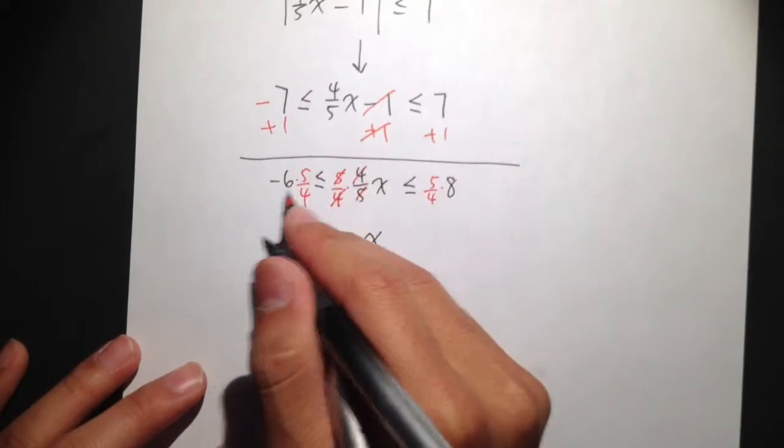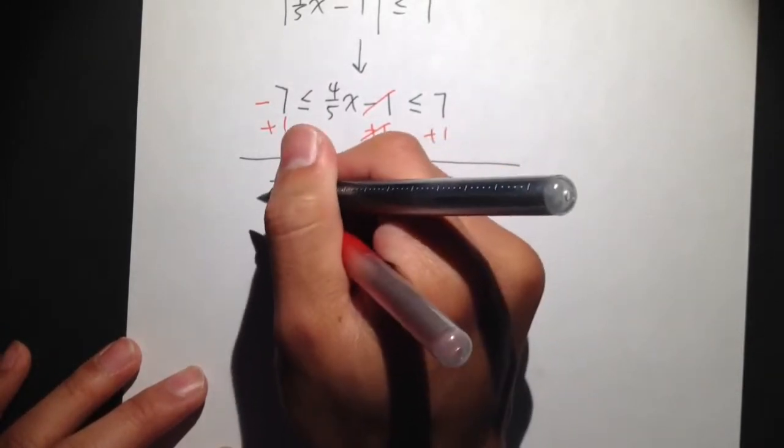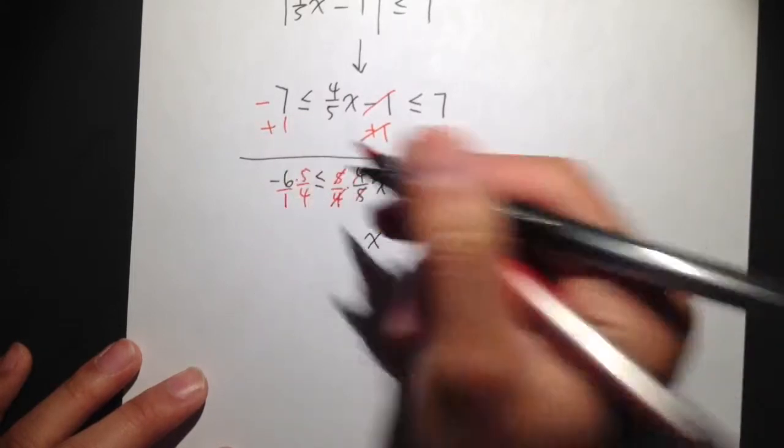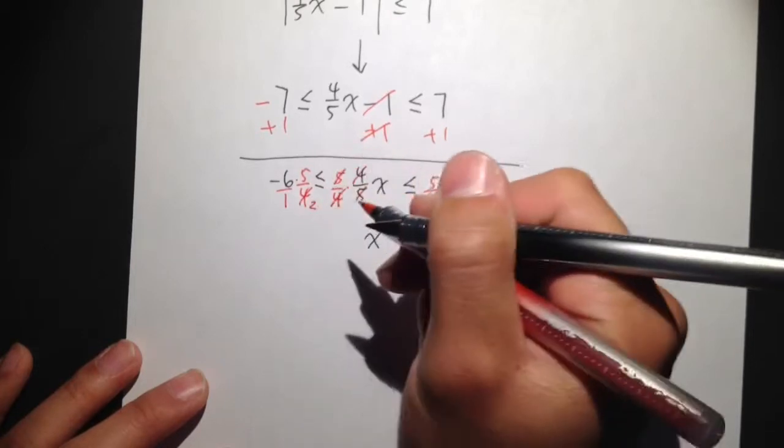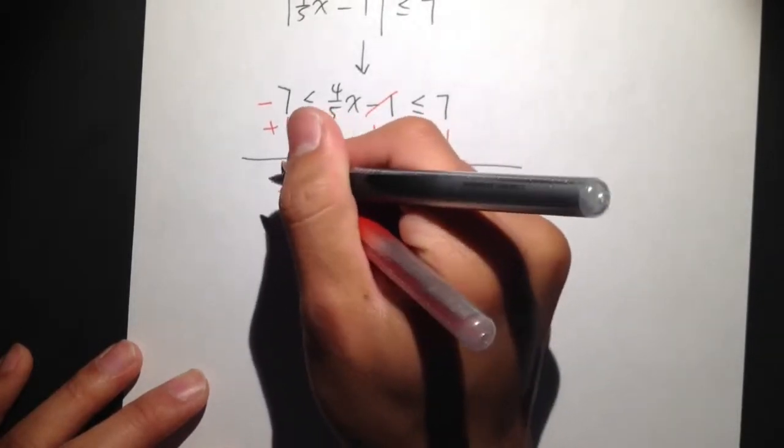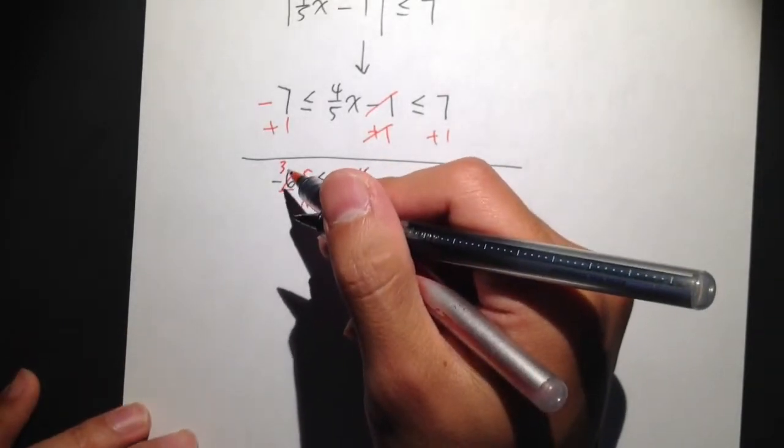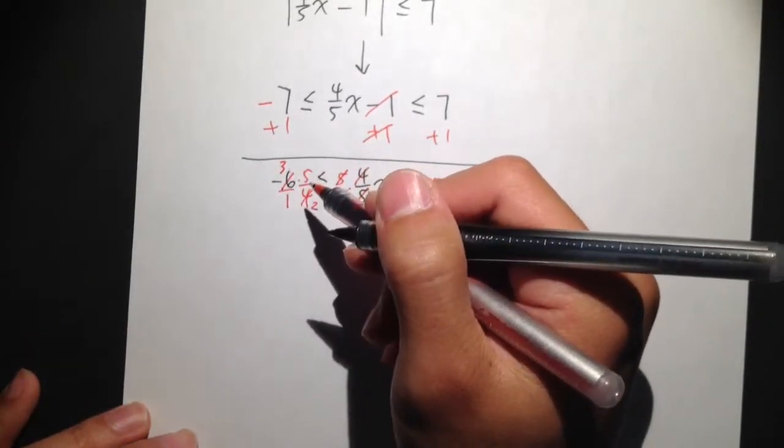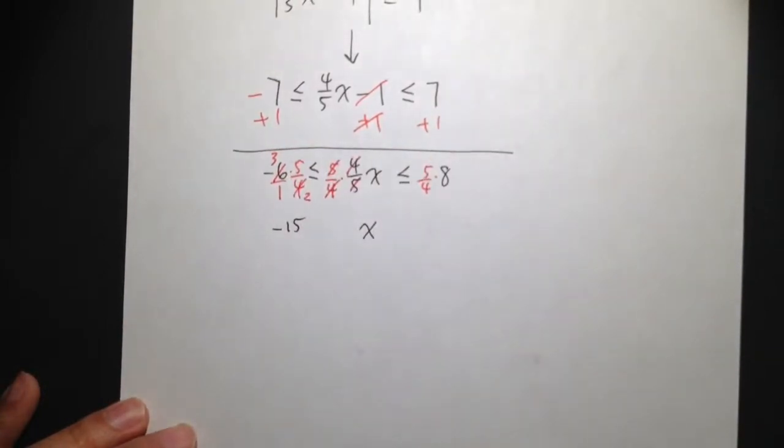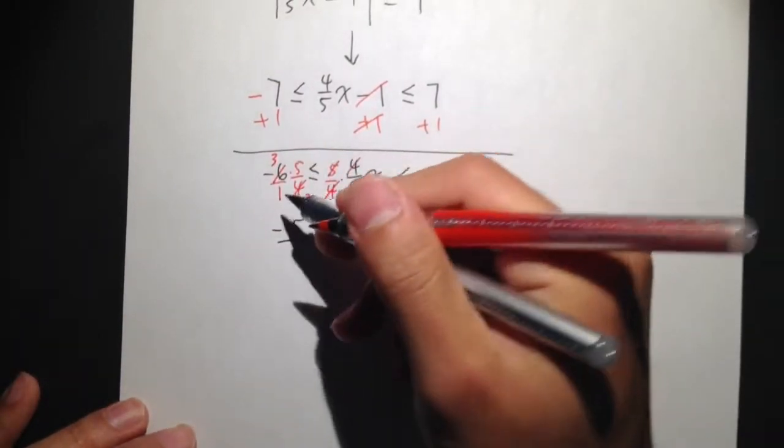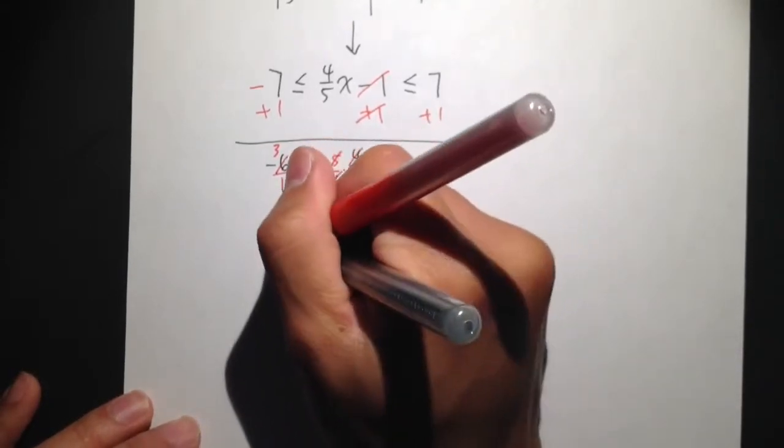Now let's work out this, negative 6 times 5 over 4. Or negative 6, we can write that as negative 6 over 1. Cross cancel first, 2 goes into 4 twice, 2 goes into 6, 3 times. So on the top, I have negative 3 times 5, we have negative 15. Over on the bottom, we have 2, I mean we have 1 times 2, which is the result of 2.